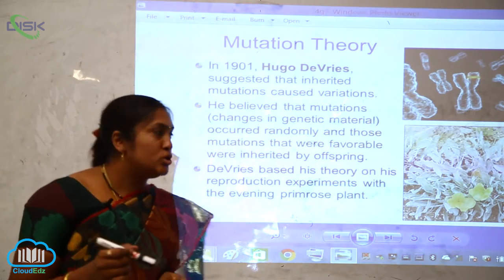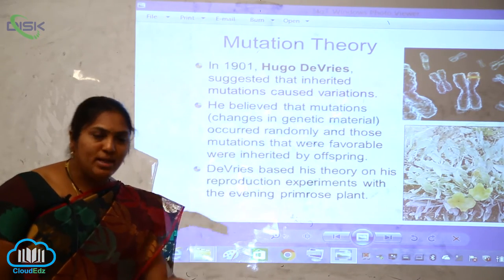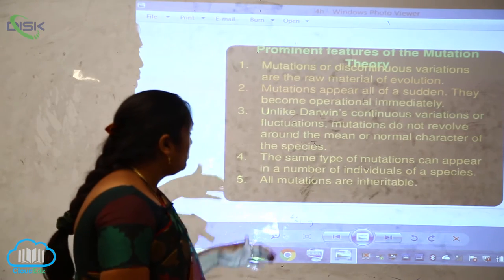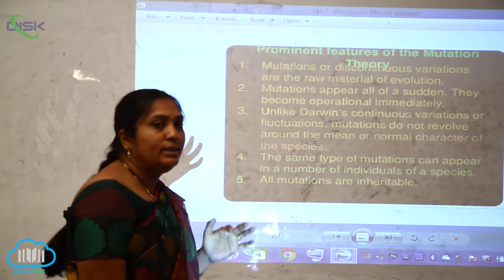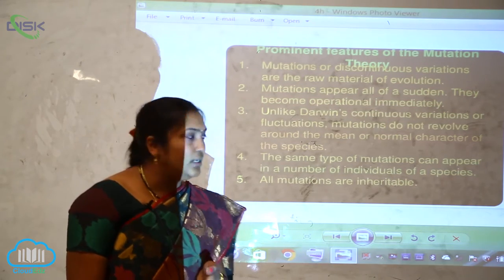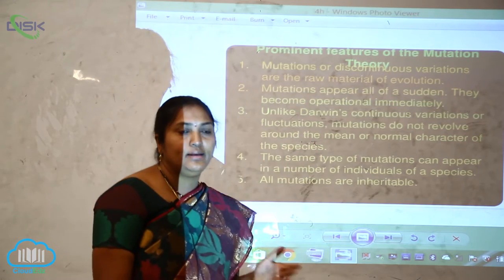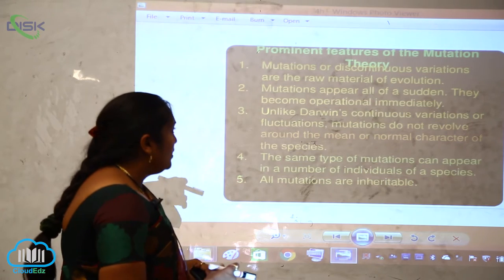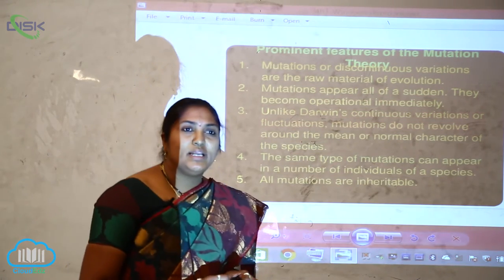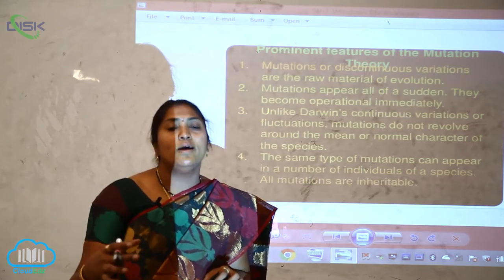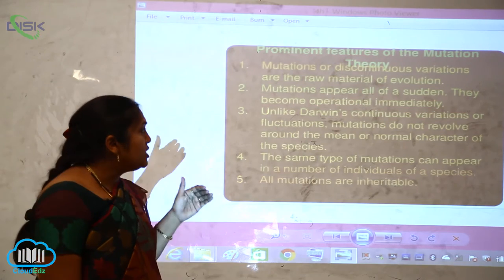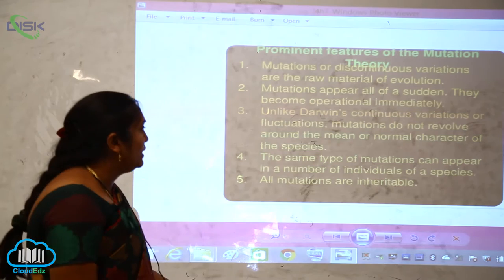Hugo de Vries conducted experiments on evening primrose and concluded that complete inheritance is due to variations. The prominent features of the mutation theory are: mutations are discontinuous variations and are the raw materials for evolution. Mutations appear suddenly and become operational immediately in that organism.